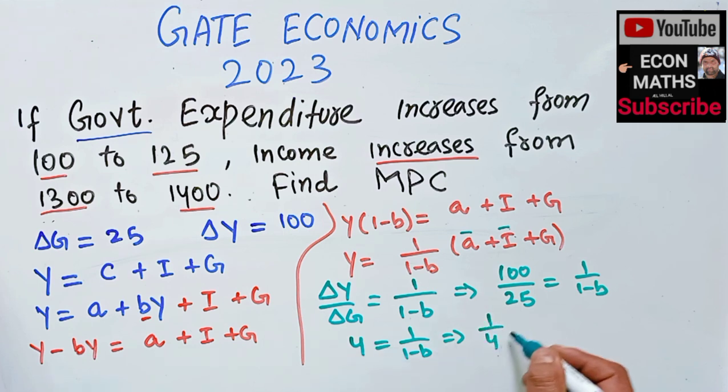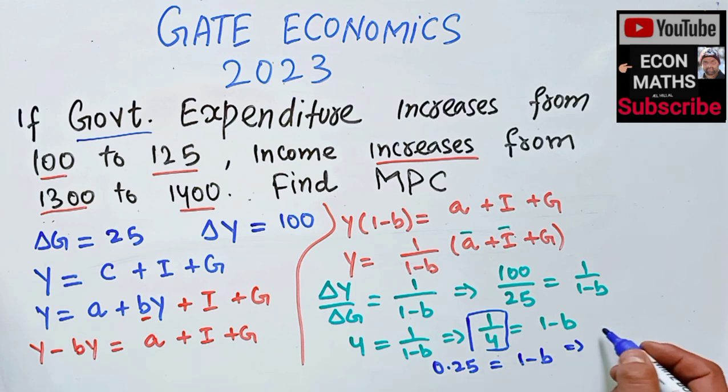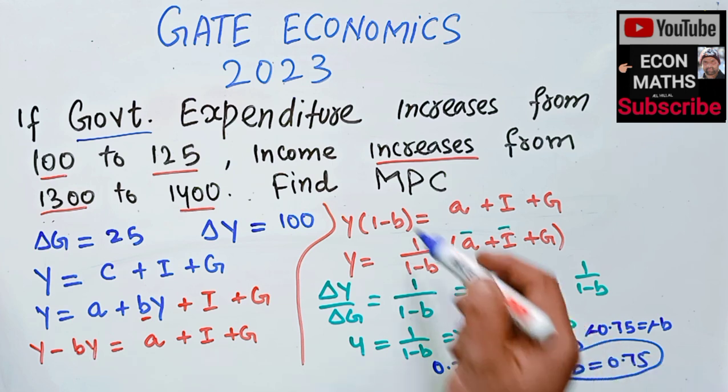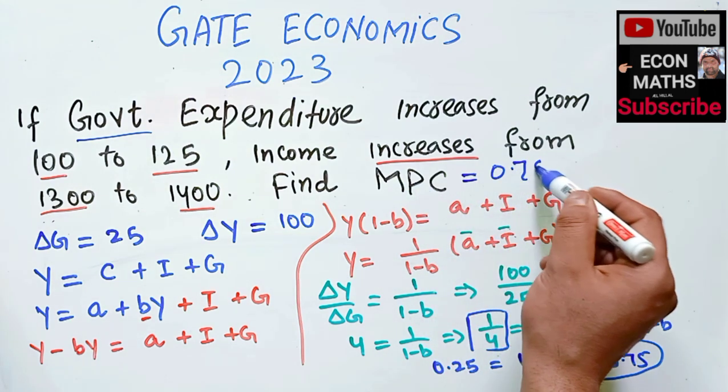Reciprocating both sides, 1/4 equals 1 minus B. That means 0.25 equals 1 minus B. Transposing, 0.25 minus 1 equals minus 0.75 equals minus B. The negatives cancel, so B equals 0.75. Therefore, MPC equals 0.75.